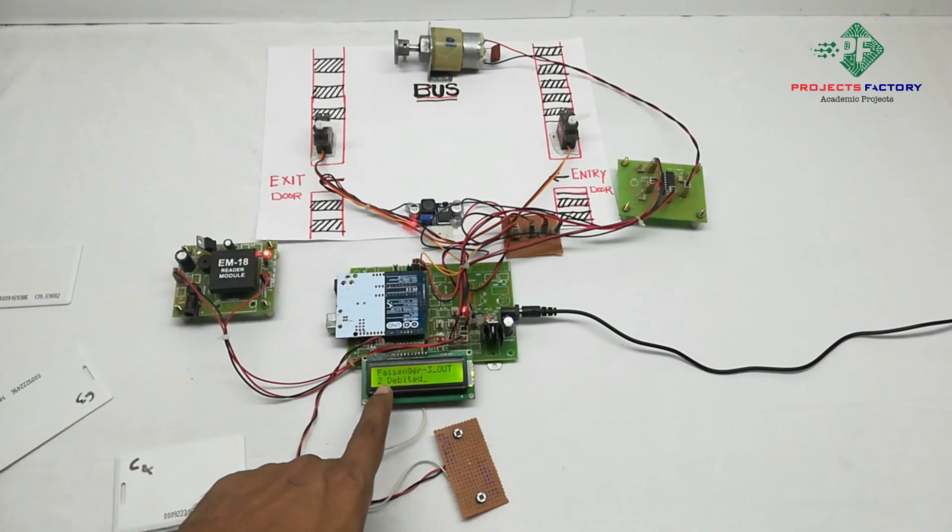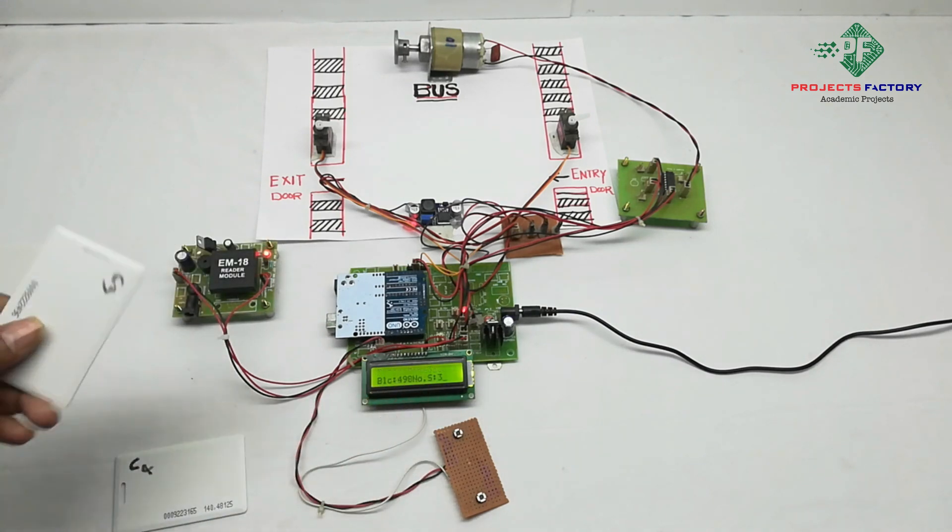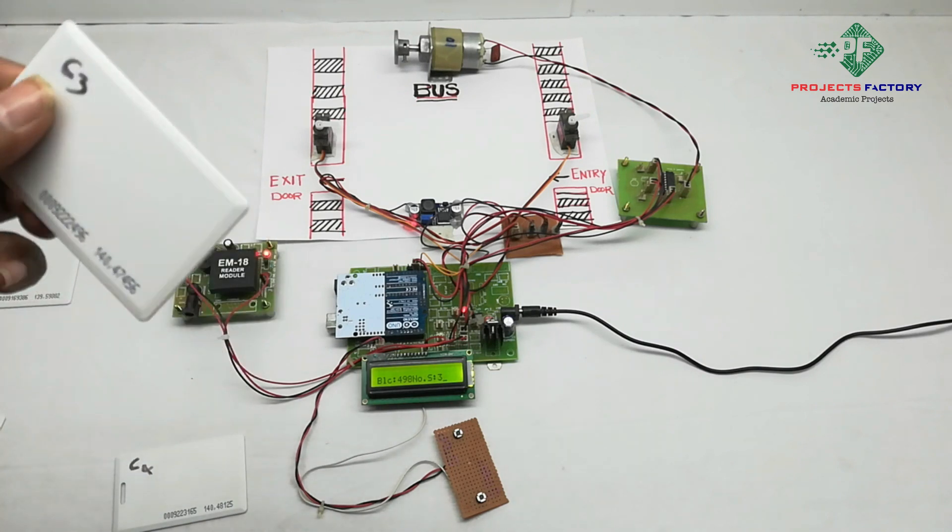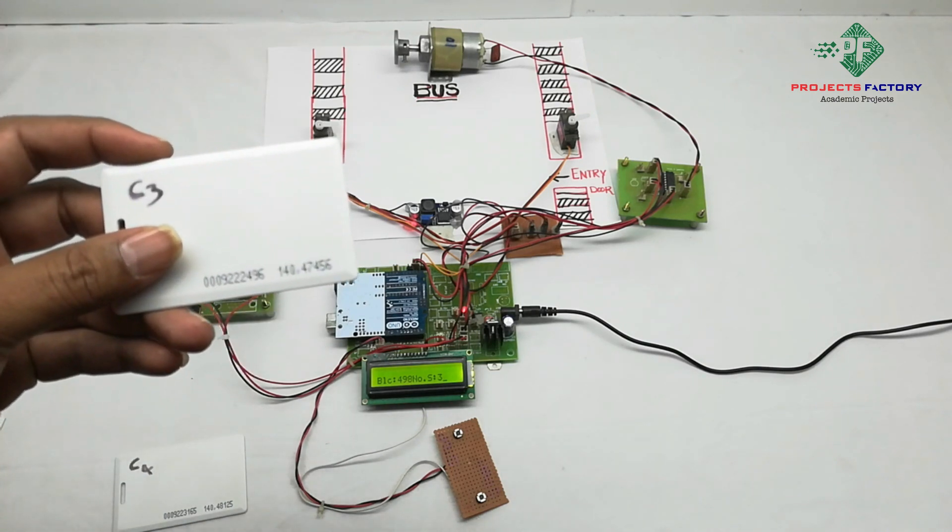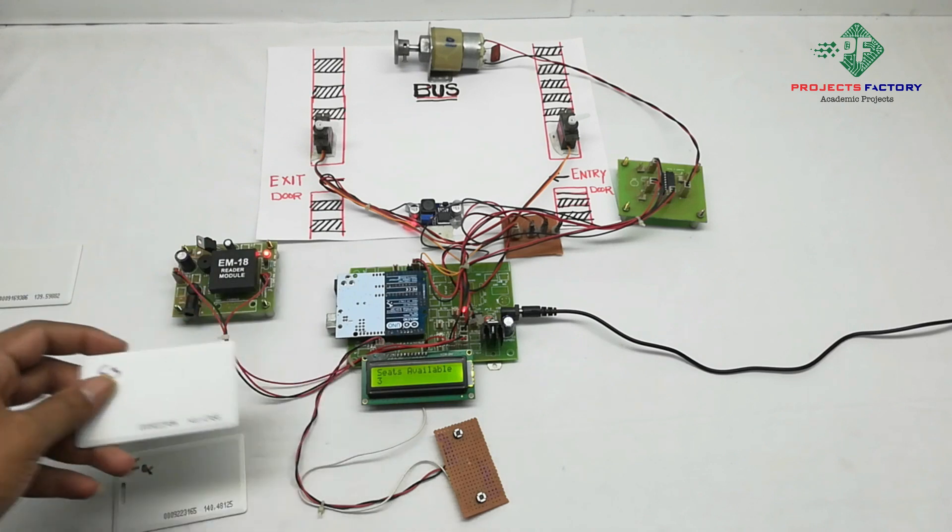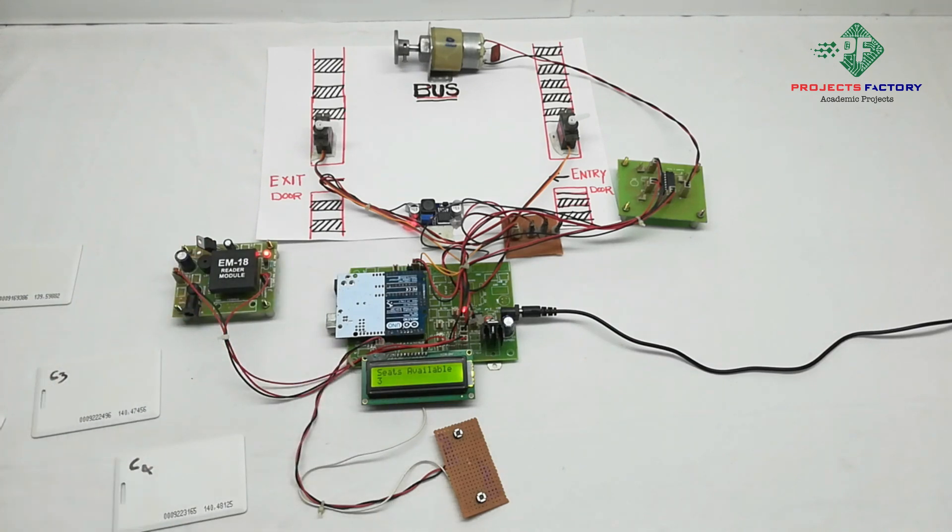Passenger 3 out - 2 rupees deducted because passenger 3 crossed 2 stops. It's showing 498 rupees and seats availability 3.